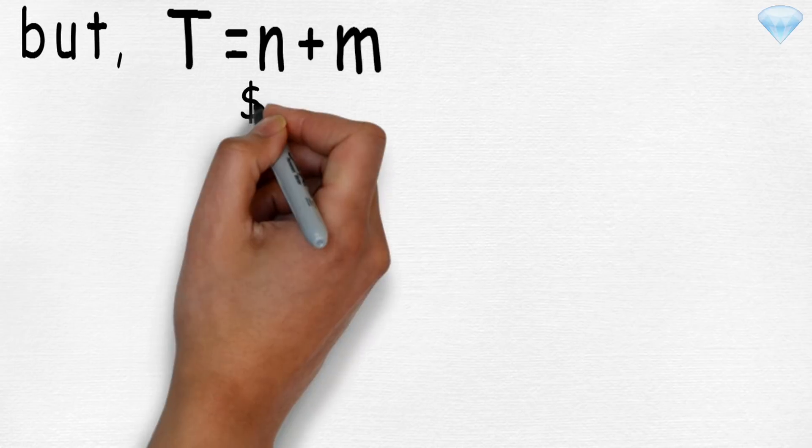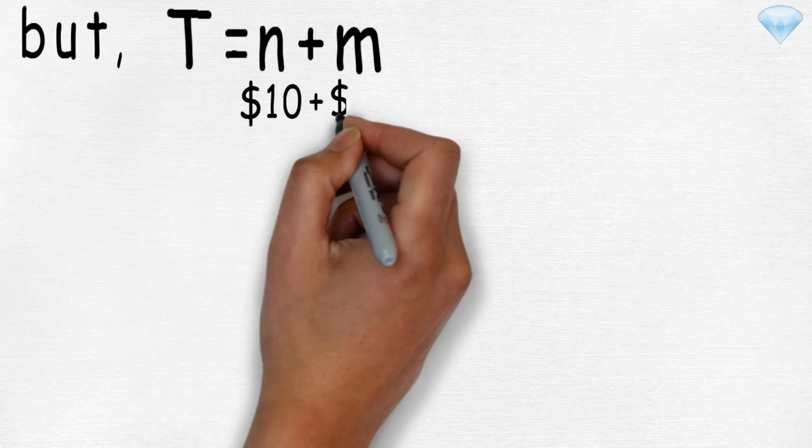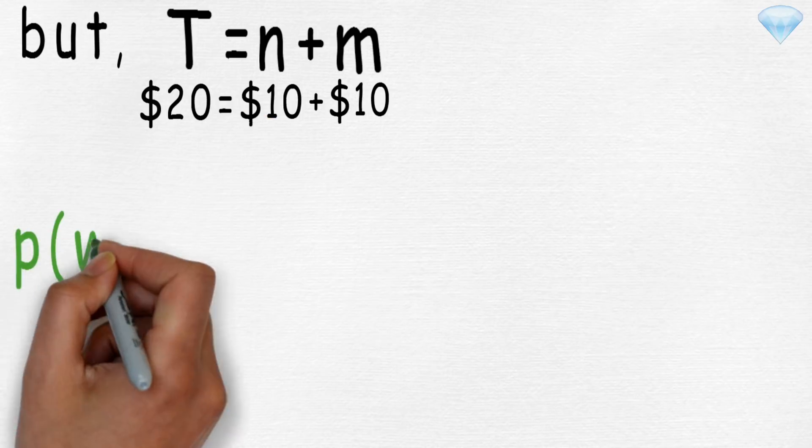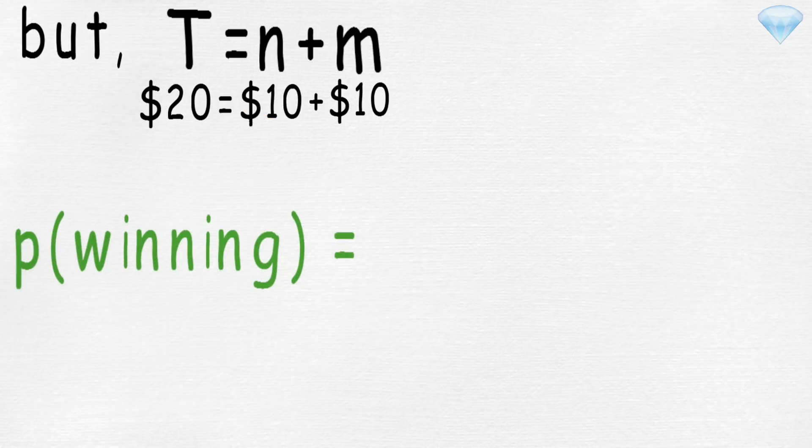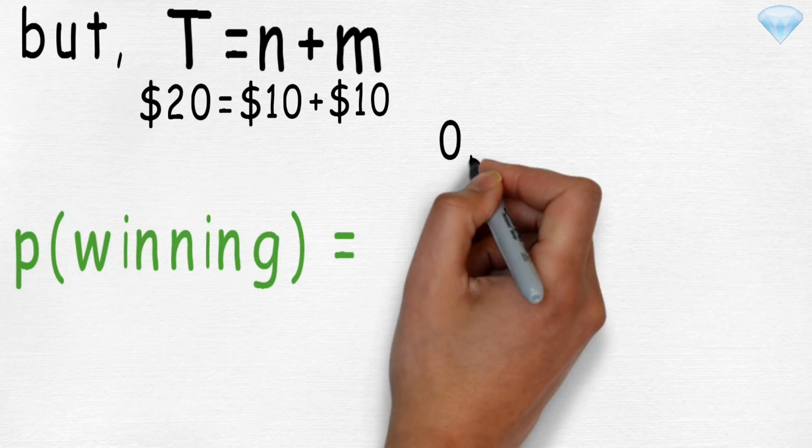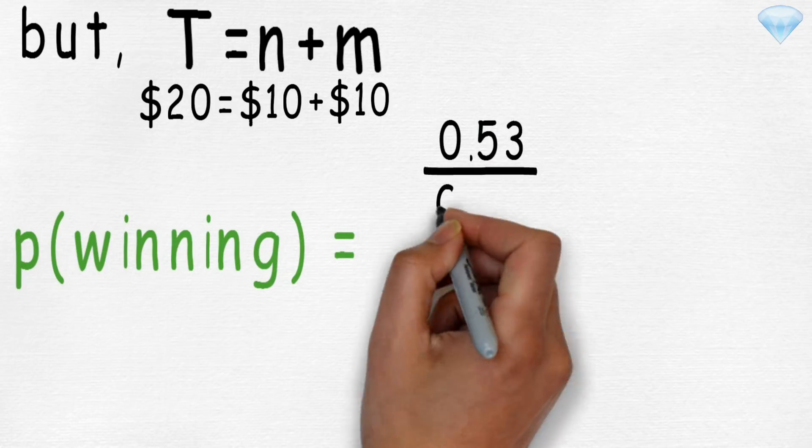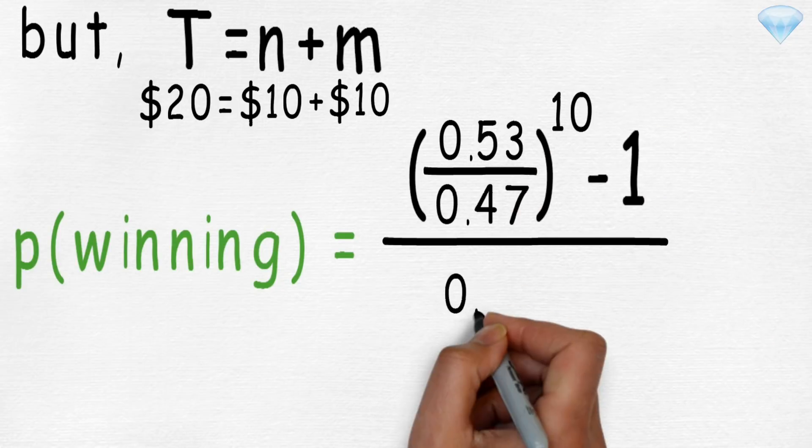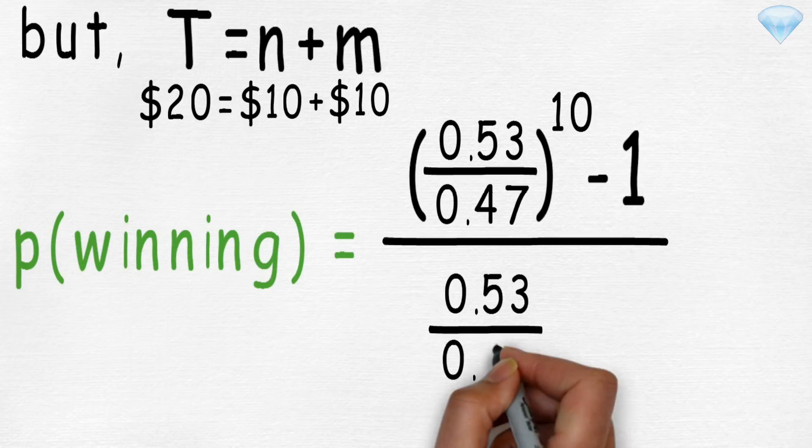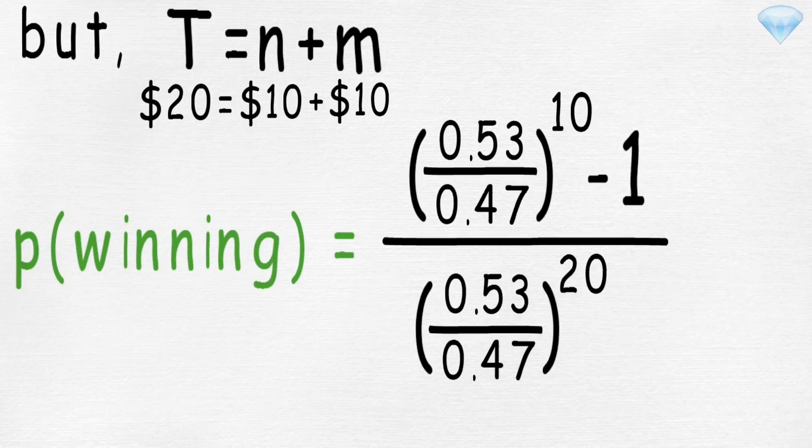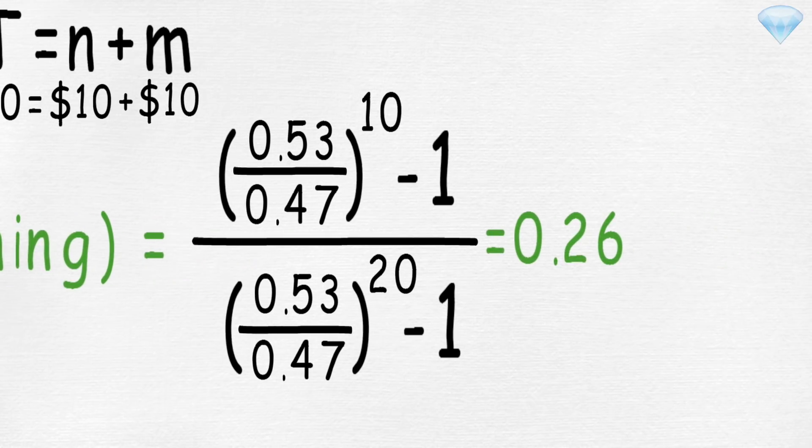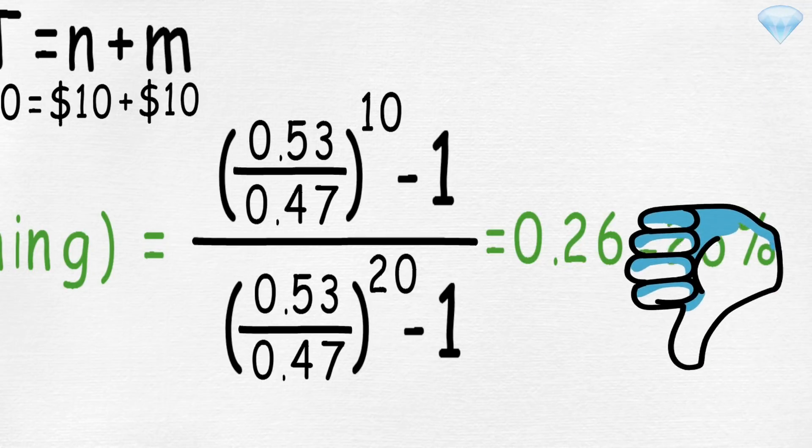But on the other hand, if suppose n equals 10 dollars and we want to double our money, then t equals 20 dollars. In this case, the probability of winning will be followed by a slightly different formula, which is 0.53 divided by 0.47 to the power 10 minus 1, divided by 0.53 divided by 0.47 to the power 20 minus 1, which is equivalent to 0.26 or 26%. So the odds are slightly better, but still not good.